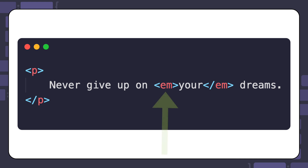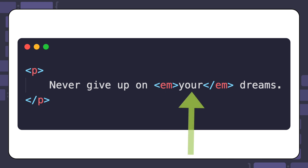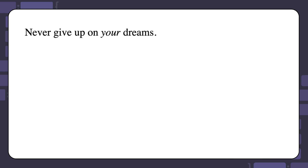Here is an example of the emphasis element within a paragraph. You can see the sentence, "Never give up on your dreams." Notice that the word "your" will be emphasized because it's inside this element. This is what you will see in the browser — the word "your" is italicized to tell readers that this is an important word in the sentence.